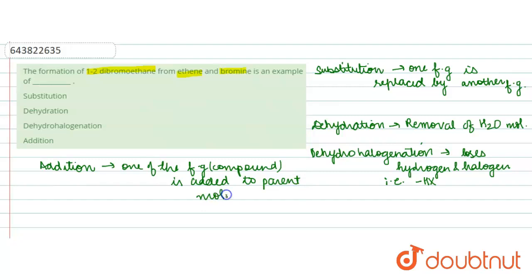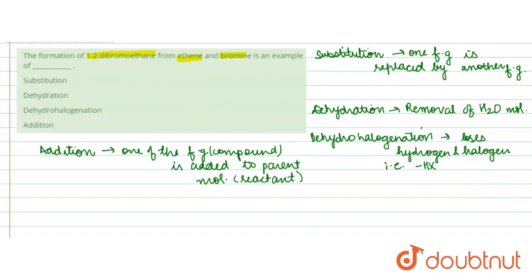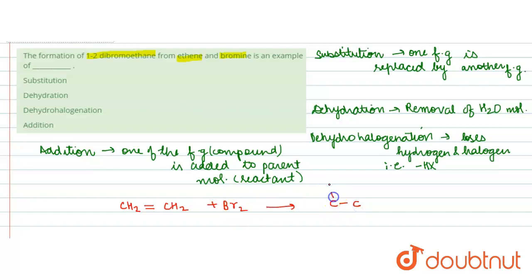For example, in the question it was asked that 1,2-dibromoethane is formed from ethene and bromine. Ethene is CH₂=CH₂; when it is reacted with bromine, it gives 1,2-dibromoethane.